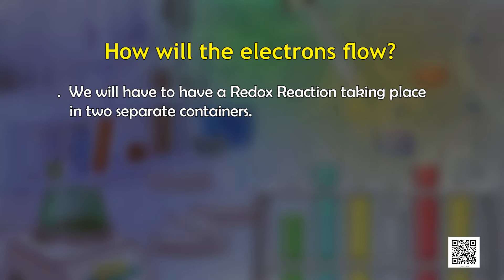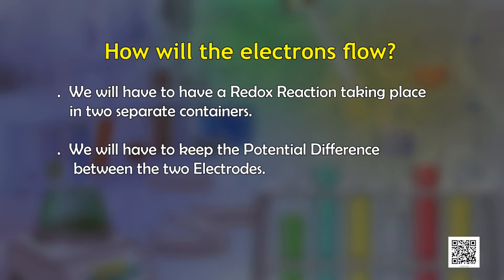In this redox reaction, if we make these electrons flow, then we can generate electricity. The question arises: how can we do this? For this, we need a redox reaction taking place in two separate containers, or one container separated by a permeable membrane. We also need to maintain the potential difference between the two electrodes. Let me explain what electrode potential means.